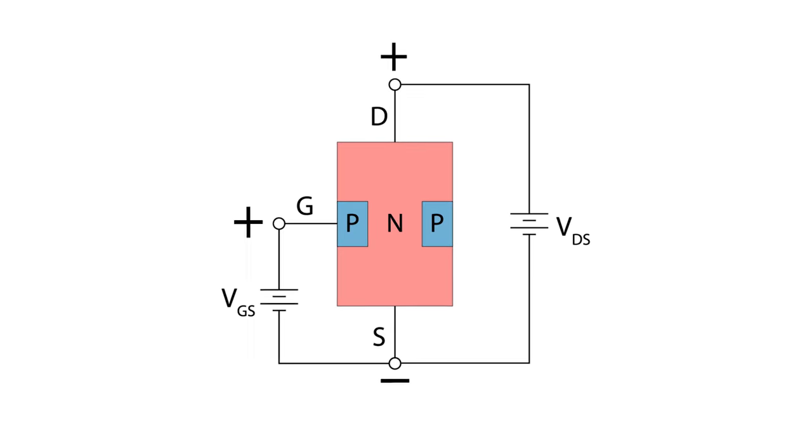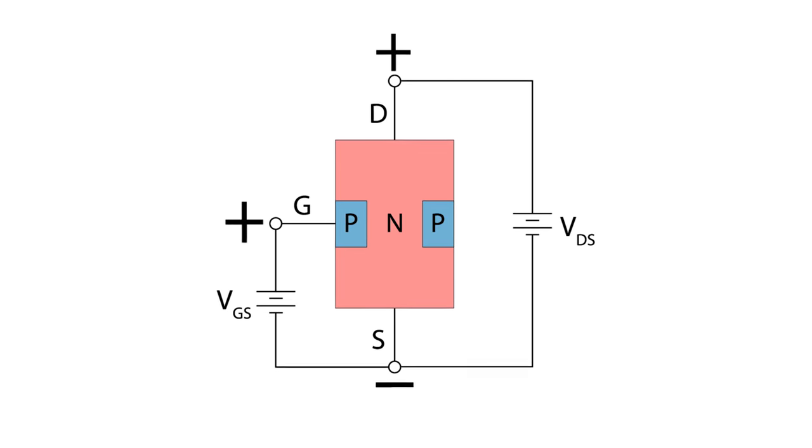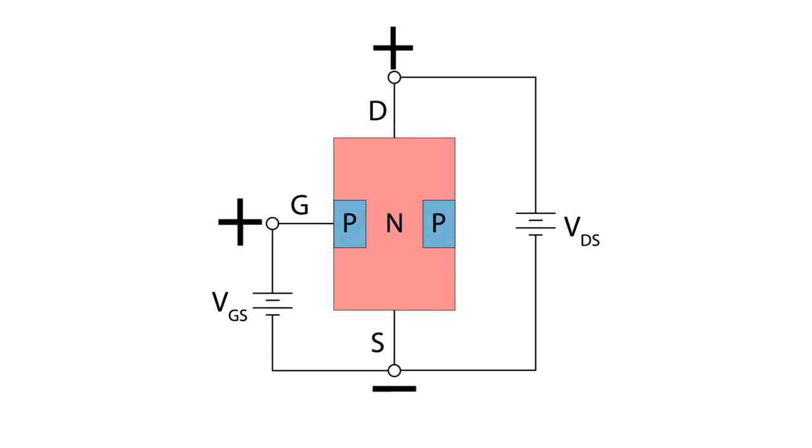We know that the gate has to be reverse bias for the JFET to function, but what happens if we forward bias the gate? Well, sadly, the gate junction is not really designed to handle any significant amount of current. And if current were to flow through the gate in forward bias, it would probably destroy the component.